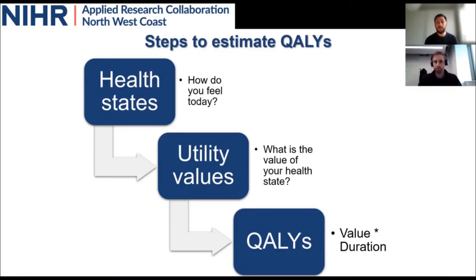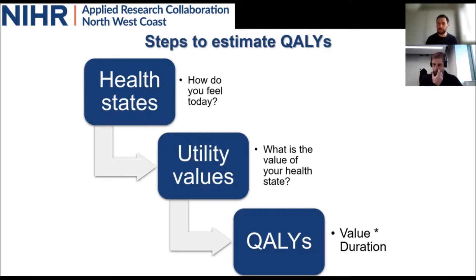Life years gained are usually measured by looking at a life table provided by official national statistics in the UK, which provides estimates regarding life expectancy by age and sex of the general population. Other approaches might consider extracting estimates from studies in the literature where patients were followed up for a prolonged period of time, giving a sense of how long patients lived in each particular health state. These are the main approaches to extract information about life years in a particular health state.